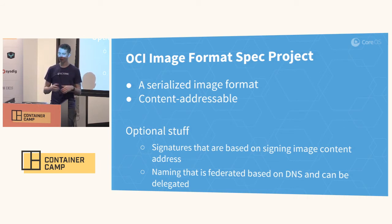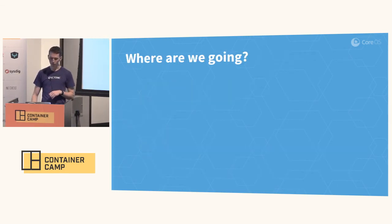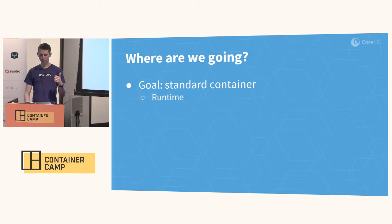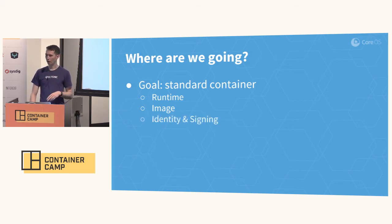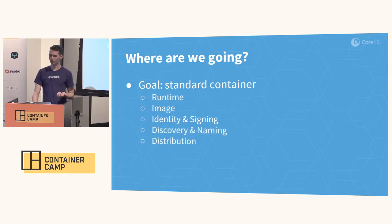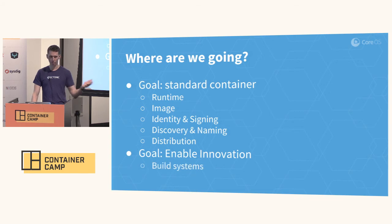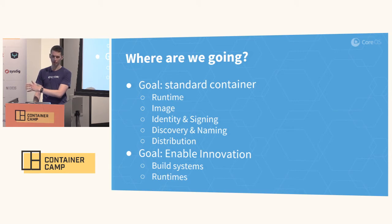Some optional stuff inside of this spec includes signatures, which are important, and naming and federation so we can do these MX record-style things. The goal is to get this standard container. We currently have the runtime stuff underway, but it's not finished — it's not 1.0 yet. We want to have this image format as well. The image format I would argue is even more urgent and important than the runtime itself. We want to end up in a spot where we have good strong identity and signing around that, and discovery and naming. The goal overall is to enable innovation, both in build systems so that people can build things the way they'd like, and in runtimes that consume those images.